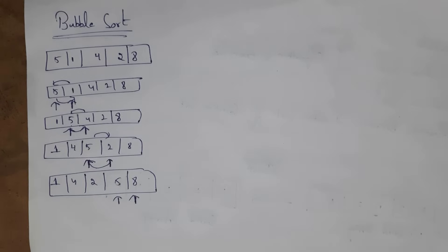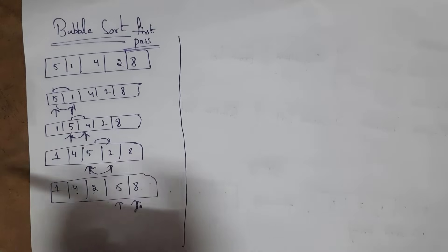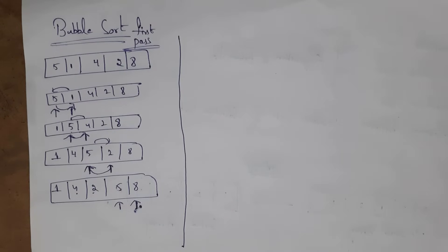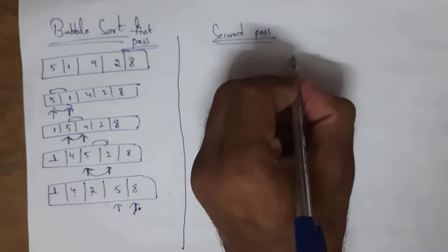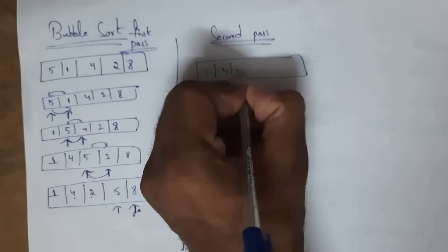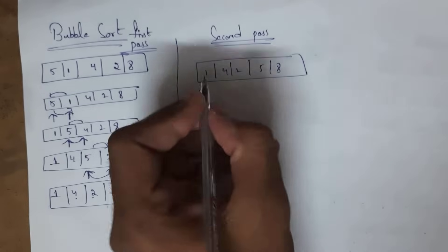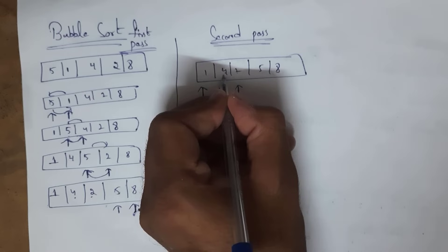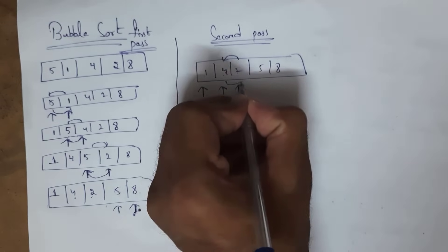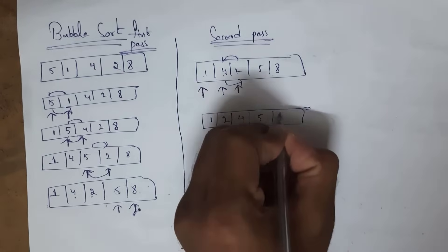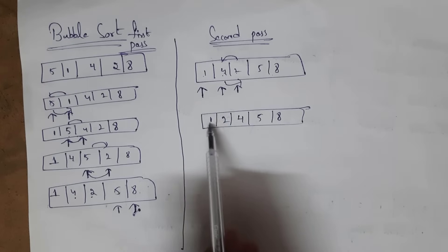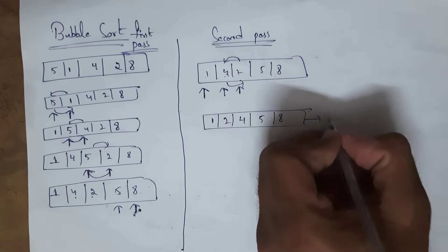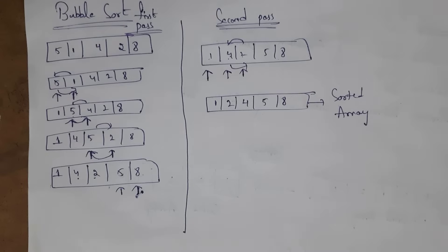The cursor has reached the last position but elements are not fully sorted, so consider this as the first pass. We need to start the second pass. In the second pass: one, four, two, five, eight. One and four are in correct order. Move to the next — two should be before four, so exchange these adjacent elements. After sorting: one, two, four, five, eight. All elements are in ascending order, so we stop. This is the sorted array.